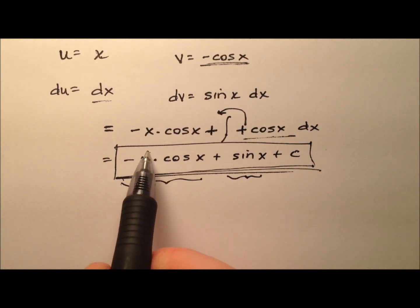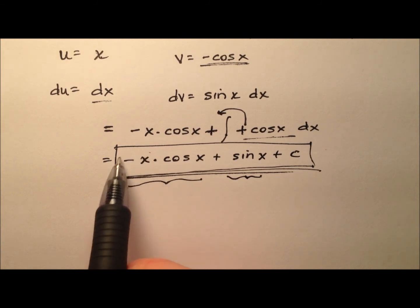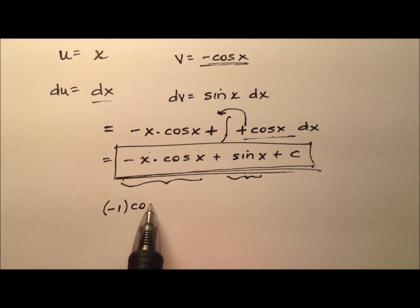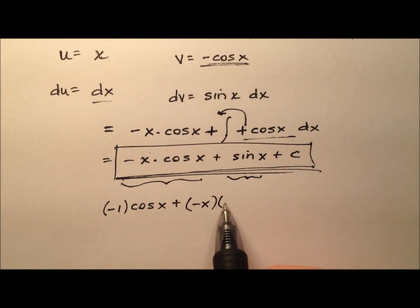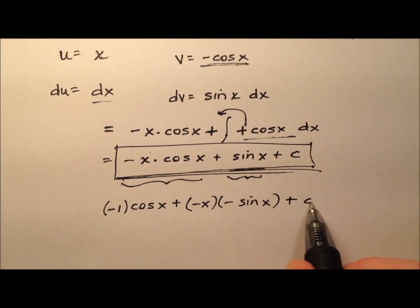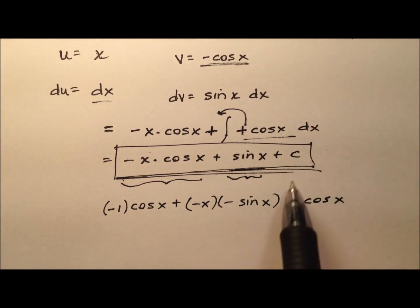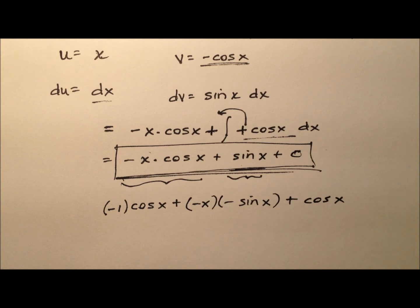The product rule says the derivative of the first times the second so the derivative of negative x will be negative one times the second which will be cosine x plus the first times the derivative of the second and the derivative of cosine is negative sine x. And then here the derivative of sine will be cosine x and derivative of a constant just goes away.